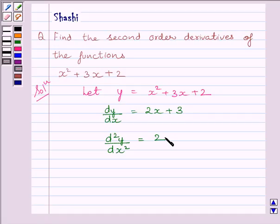Clearly we can see d square y upon dx square is the second order derivative of y. So the required second order derivative is equal to 2.